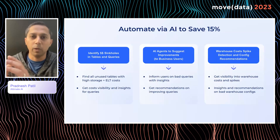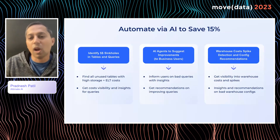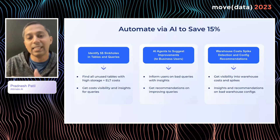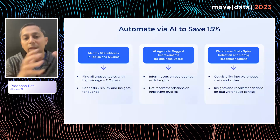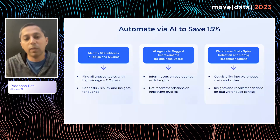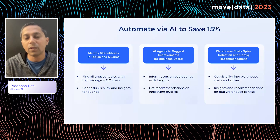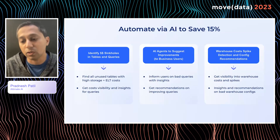On the third part — Snowflake warehouses — it can do cost spike detection, and by analyzing warehouse configurations and your workloads, it can give you insights and recommendations around warehouse configurations: which warehouse to use for which workload, etc. This overall intelligence and automation will help you net-net save a lot of money on your Snowflake costs.